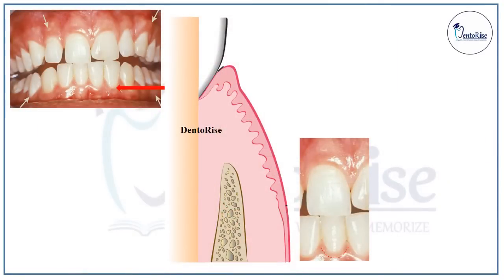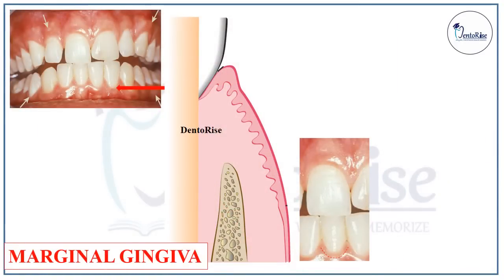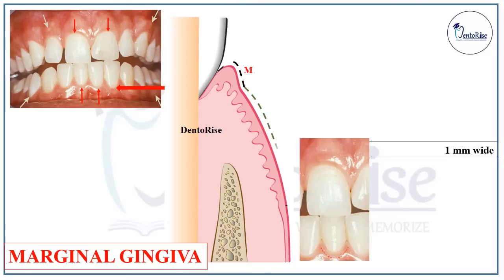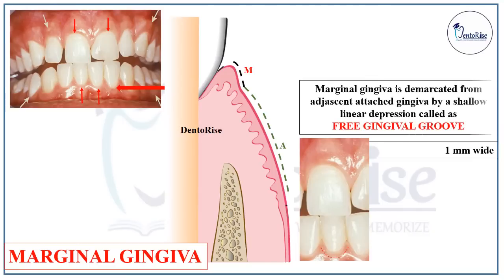First, talking about the marginal gingiva. This gingiva is present on the margins of the tooth, as we can see in the figure on the left with the help of red arrows. This gingiva is roughly 1 mm wide and it is demarcated from the adjacent attached gingiva by a shallow linear depression called the free gingival groove, marked in the figure on the left with black dotted lines and on the right with a black arrow. This marginal gingiva surrounds the teeth in a collar-like fashion.